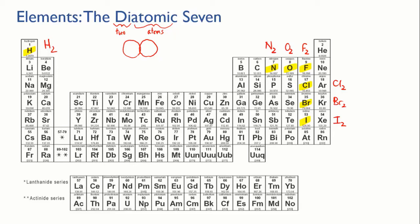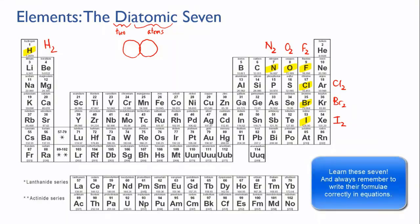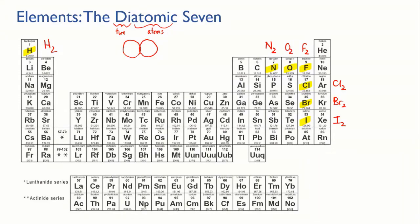However, if you ever have to write the formula of any one of these seven elements, as it actually exists in nature, for instance, if you're writing a chemical equation, then these seven must be written to show that they are diatomic. Learn these seven and know them off by heart because they will turn up over and over again.